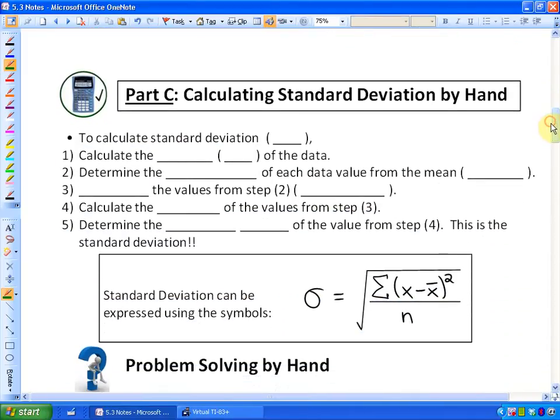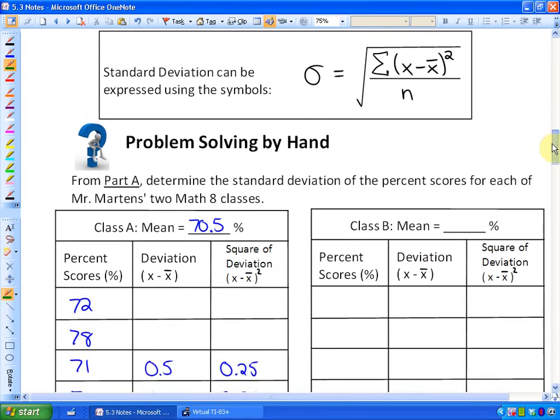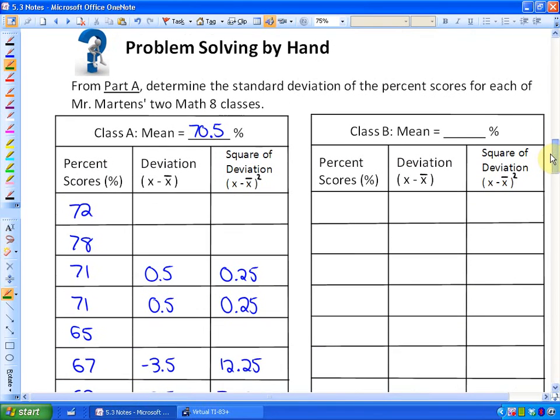We're going to look at how do we actually calculate the standard deviation for these two Mr. Martin's classes. I want to show you how to do it. How do we problem solve by hand? From part A, determine the standard deviation of the percent scores for each of Mr. Martin's two math eight classes. I'll show you how to do class A, and you might want to try class B on your own. For class A, we found that the average was 70.5%.